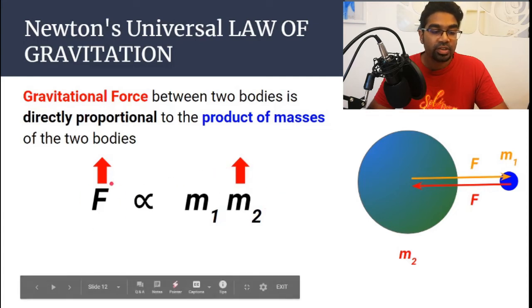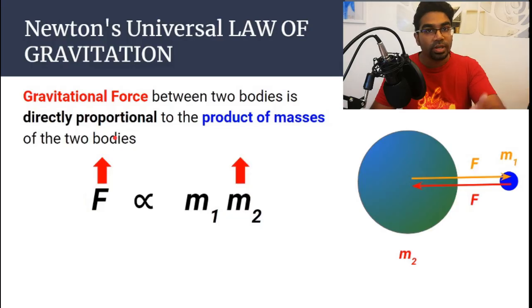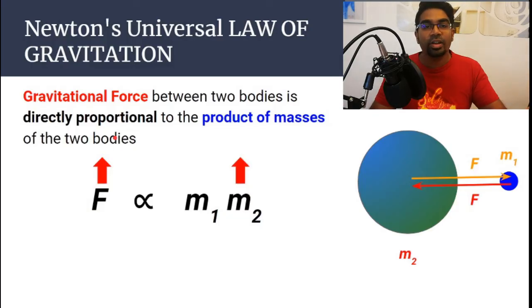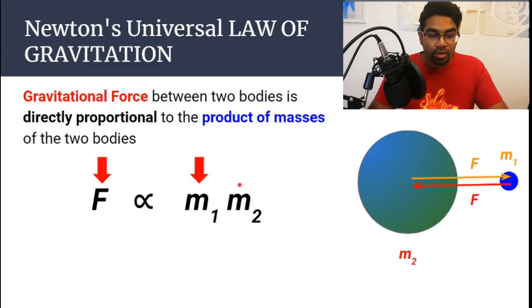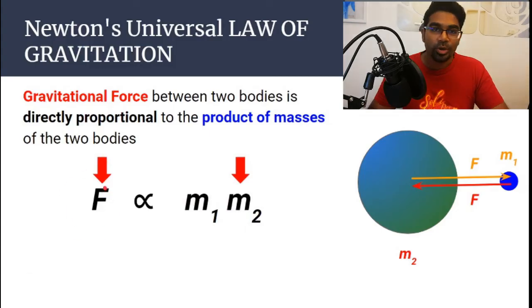If m₂ increases, then the gravitational force will increase as well. So the larger the mass of the two bodies, the higher the gravitational force between the two bodies. In the same way, the lower the mass of the two bodies, the lower the gravitational force between the two bodies.